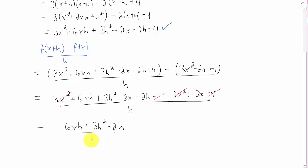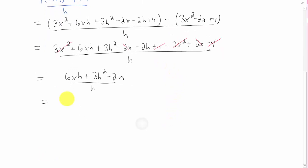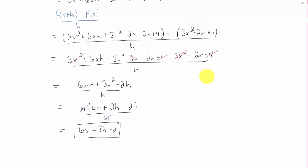What we're left with is this right here. We want to cancel an h, and probably the safest way to do that is to use our factoring skills. We can factor an h out of the numerator, and now this h in the denominator can cancel with the factor h in the numerator. And we have our final answer. There it is.